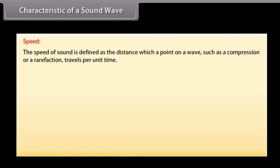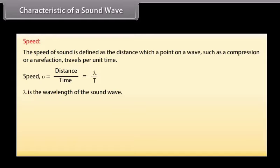Speed. The speed of sound is defined as the distance with which a point on a wave such as a compression or a rarefaction travels per unit time. We know that speed v is equal to distance upon time which is equal to lambda upon T. Here lambda is the wavelength of the sound wave. It is the distance travelled by the sound wave in one time period of the wave. Thus v is equal to lambda into nu, that is speed is equal to wavelength into frequency.